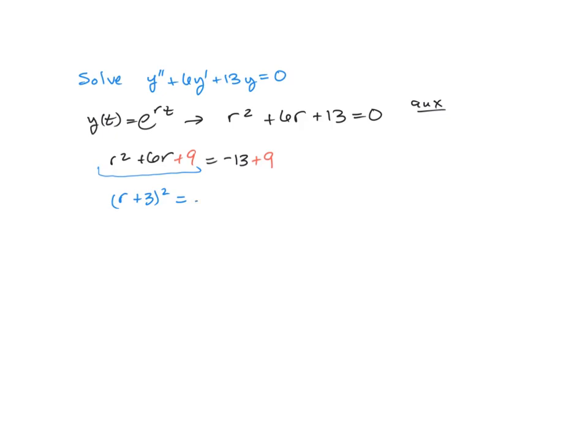So we're going to have -4 on that side. Then we can take the square root of both sides, as we normally do. That gives us r + 3 = ±√(-4), so r + 3 = ±2i. Therefore, r = -3 ± 2i.